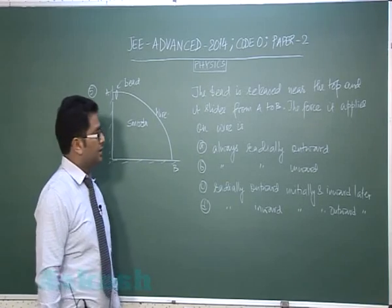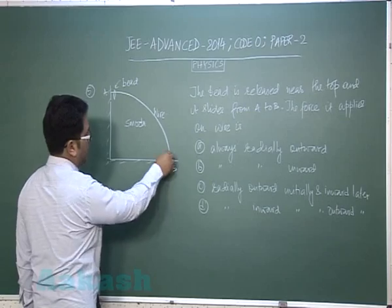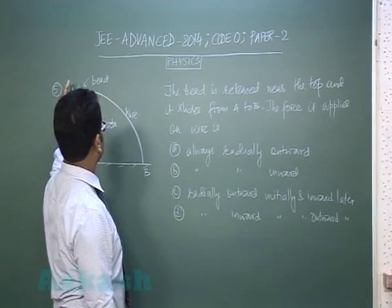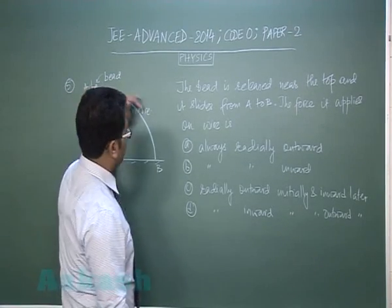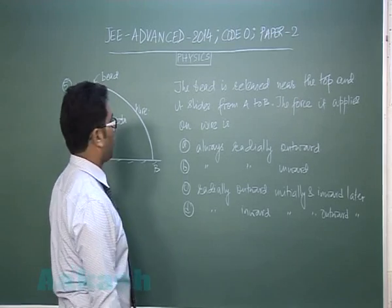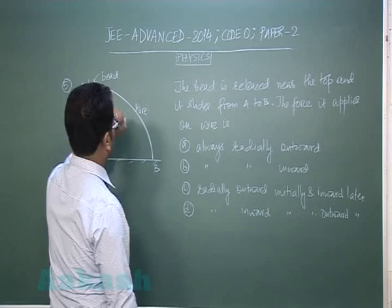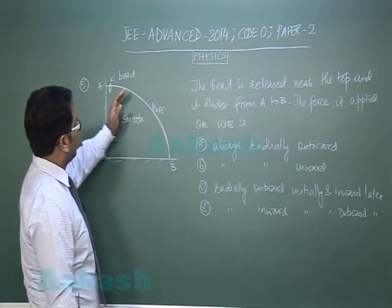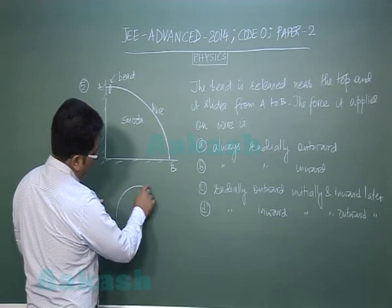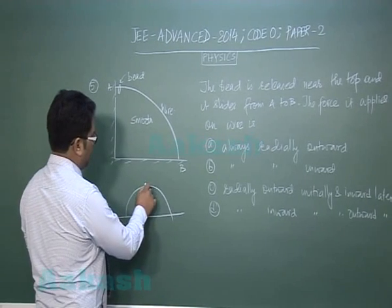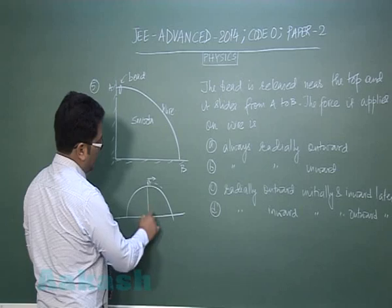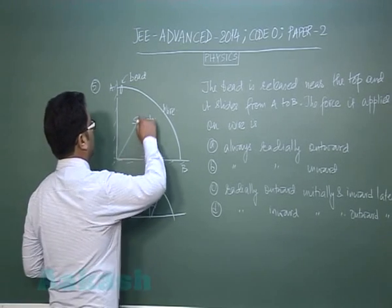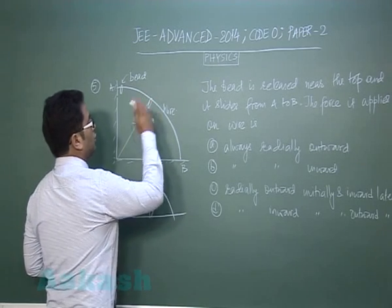Question five is from Mechanics. There is a smooth wire and a bead slides along it. The bead is released near the top with almost zero velocity and slides from A to B. The force it applies on the wire is the normal reaction. This can be inspired from the block-on-sphere problem: a block stays until cos theta = 2/3, then loses contact. Similarly, here until cos theta = 2/3, the bead remains on the wire, after which it would fly away.